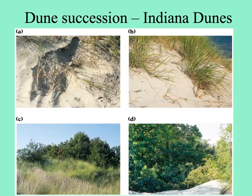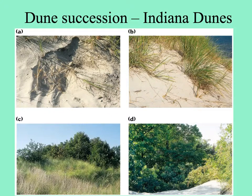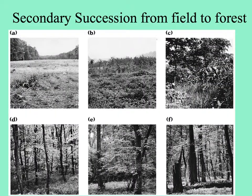Let's look at some photos of dune succession. In A, sand piles up through the action of waves and wind, and is first held in place by rhizomatous grasses that grow over the bare sand, as seen in B. Once that area is stabilized, other plants can grow in C — shorter at first — until D, when you get a forest in back of the dune. That was primary succession.